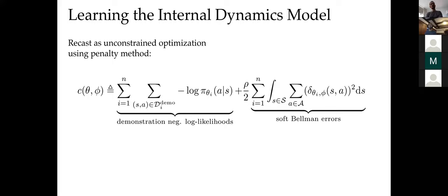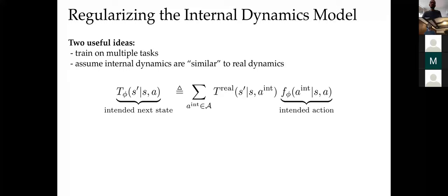We approximately solve this by sampling constraints as in standard deep Q-learning and recasting the problem as an unconstrained optimization using the penalty method — minimizing the sum of squared Bellman errors. This way you can use existing machinery and code bases to run gradient descent and search for an internal dynamics model that maximizes the demonstration likelihoods.